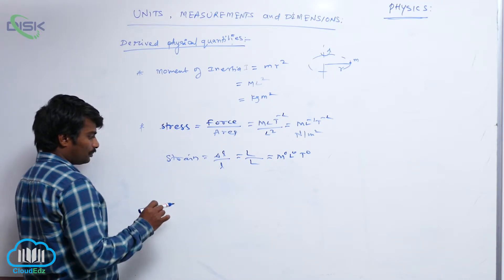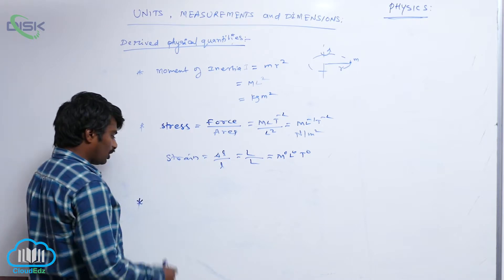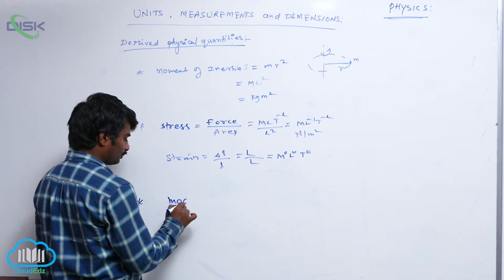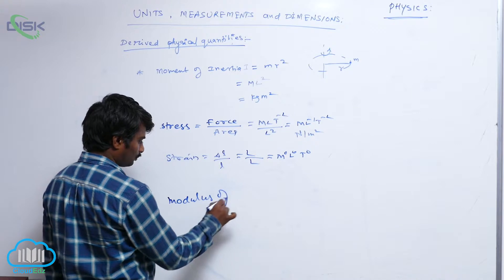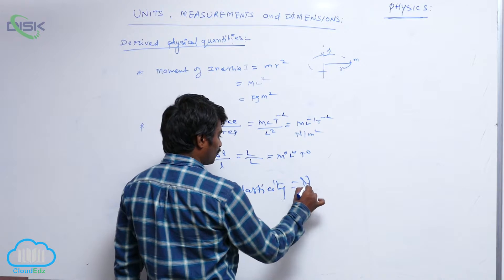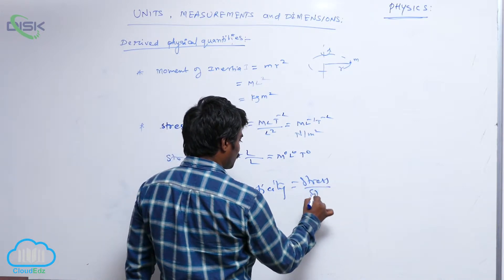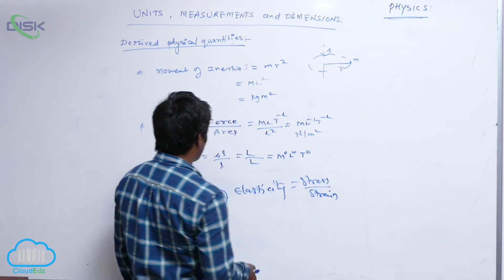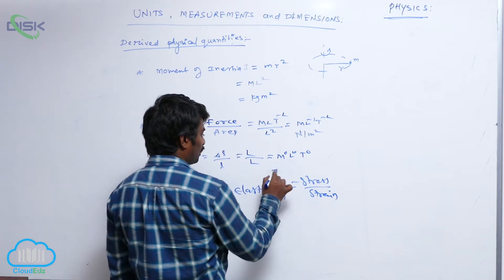That is why, now Poisson's, now the modulus of elasticity is equal to stress by strain, so strain does not have any dimensions and also no unit.